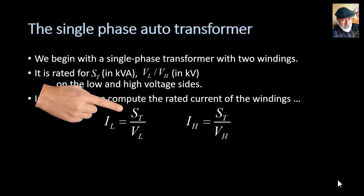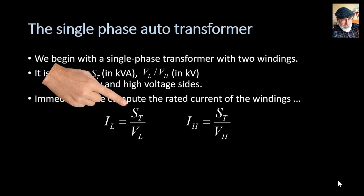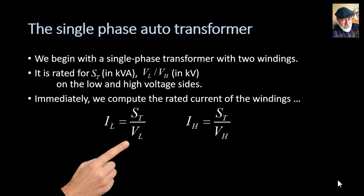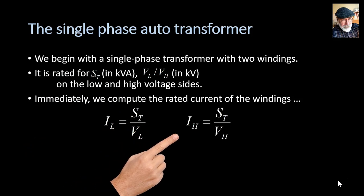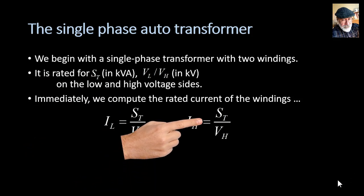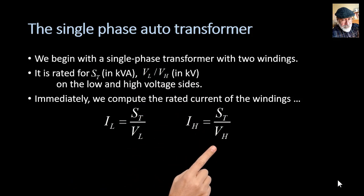IL is the rated power of the transformer divided by the rated voltage of the low side and the rated current of the high side is also ST but divided by VH.